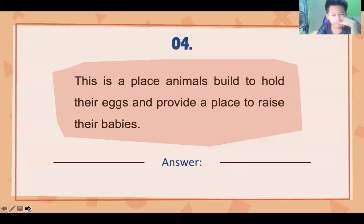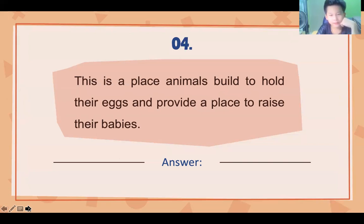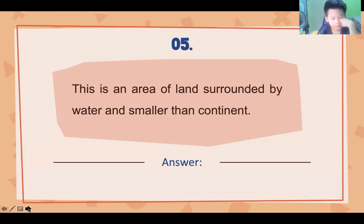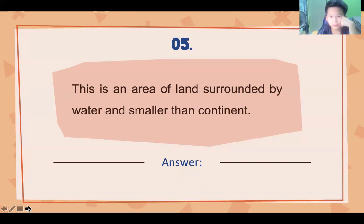Number three. Number four: this is a place animals need to hold the eggs and they find a place to raise the baby. Answer: a nest. Number five: this is an area of land surrounded by water and smaller than a continent. Answer: an island.